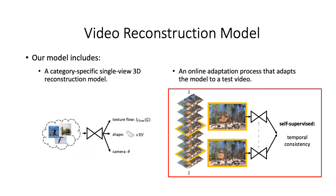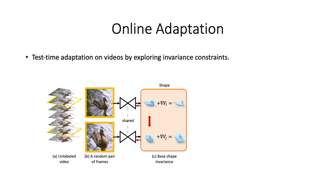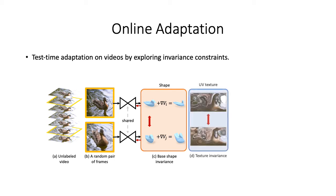Next, we adapt the image reconstruction model to a test video over time using self-supervised regularization terms. For shape-invariance, since the identity or characteristics of a bird don't change over time, we enforce the basis combination in each video frame to be consistent.